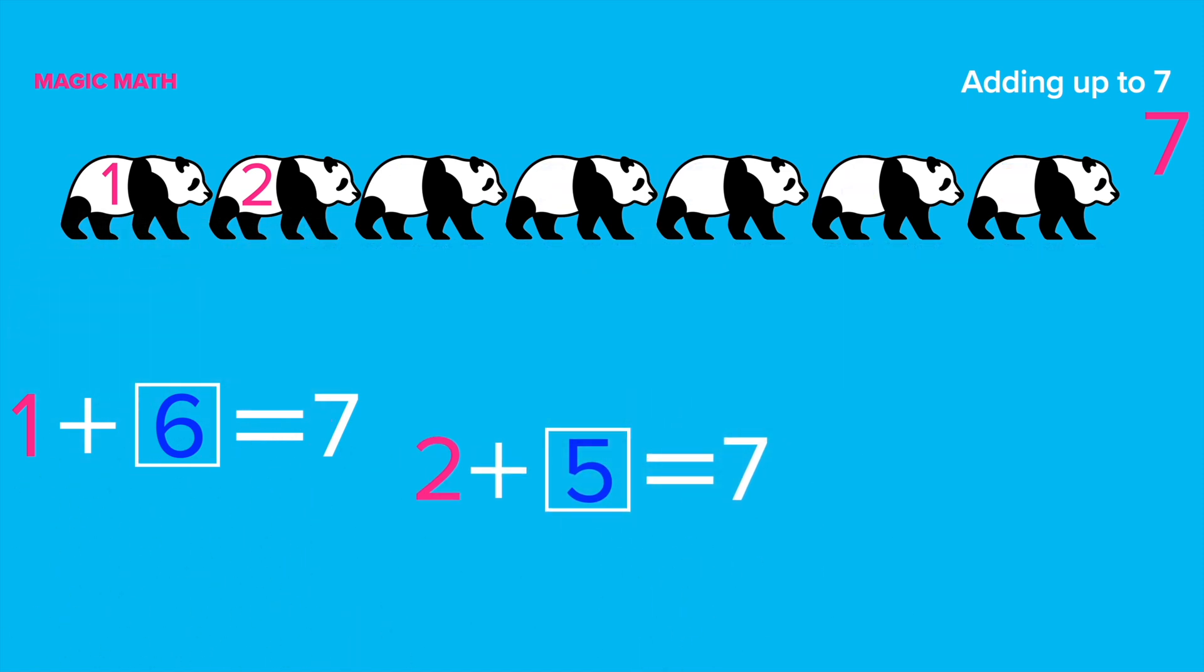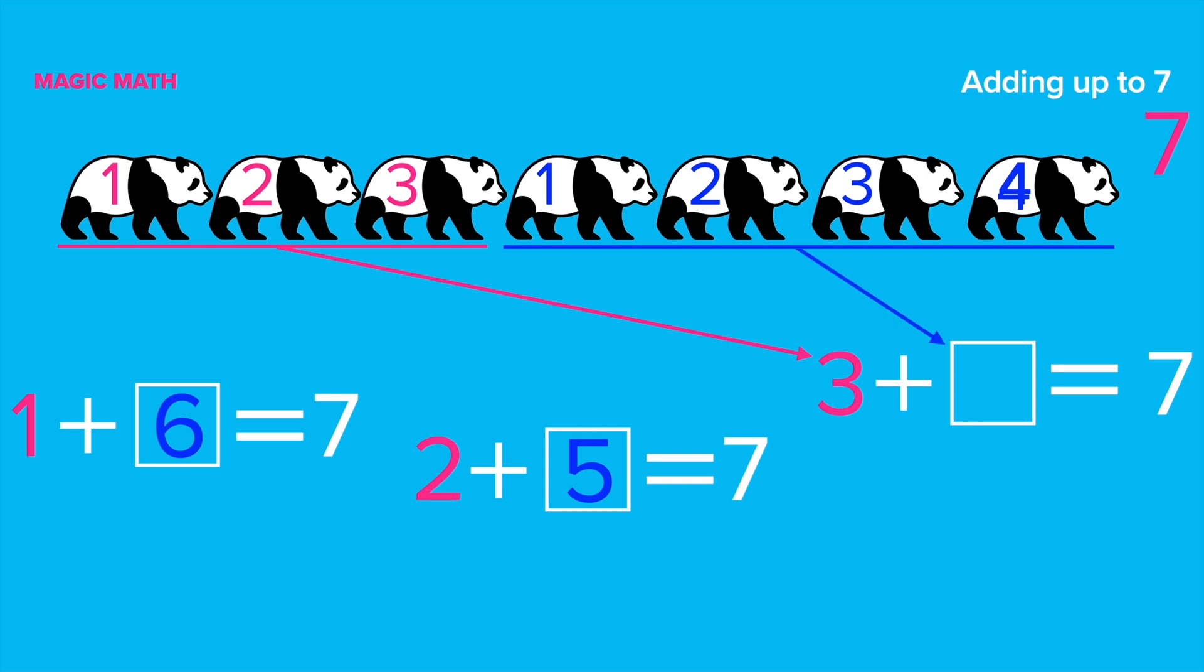Now, let's work on the third puzzle. 3 plus what equals 7? Let's draw it out. Let's underline the first three pandas and connect them to the number 3. How many pandas are not counted? Let's count. 1, 2, 3, and 4. Right! 4 pandas. So, 3 plus 4 equals 7. Well done.